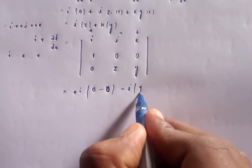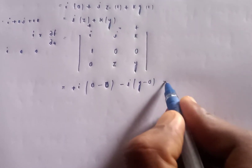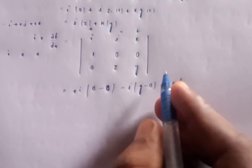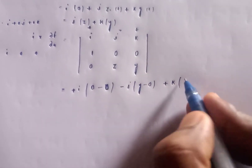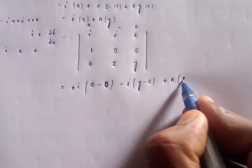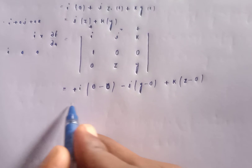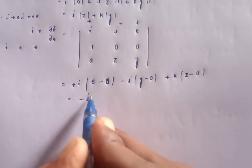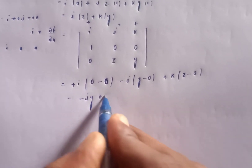Evaluating the cross product i cross ∂f/∂x, we get: k component gives 1 times z minus zero, and j component gives y minus zero. So i cross ∂f/∂x equals minus jy plus kz.